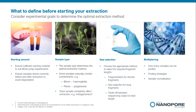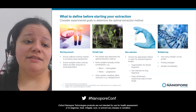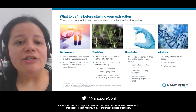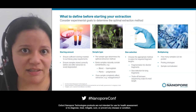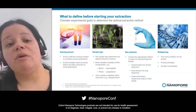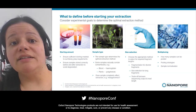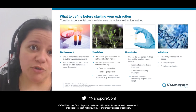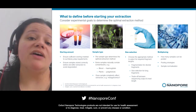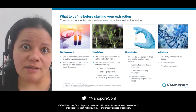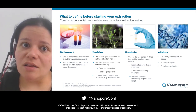There are things you need to define before you start extractions. The first is the starting amount — you need to know how much DNA or RNA you'll need for library preparation. For instance, the ligation sequencing kit requires a standard input of one microgram, but the ultra long kit requires 40 micrograms. We do have kits for lower input amounts, but it's important to define what you need first because that may affect the extraction method you choose.